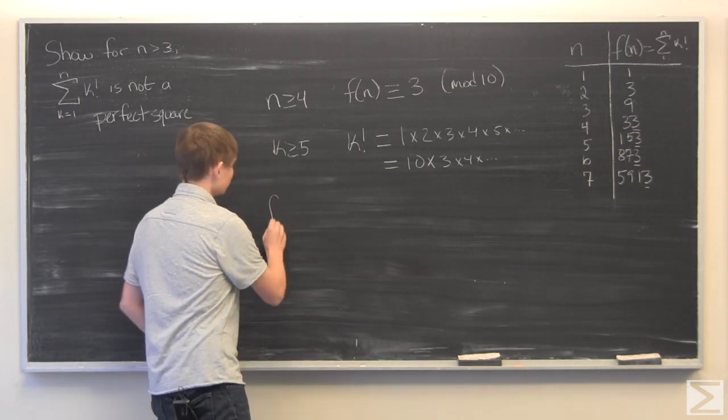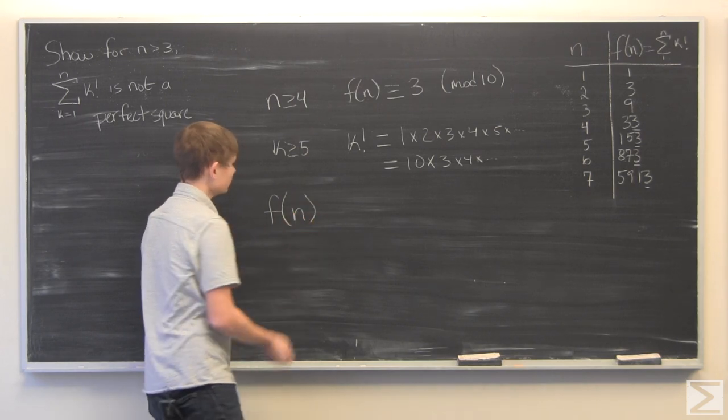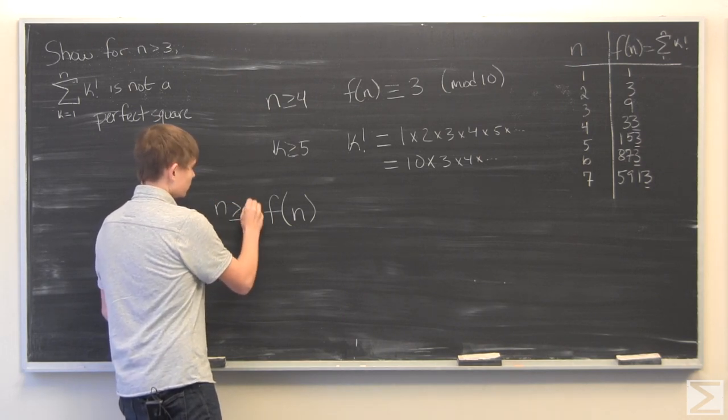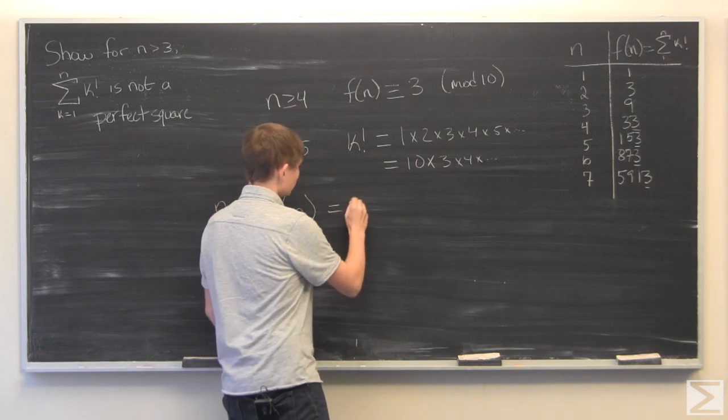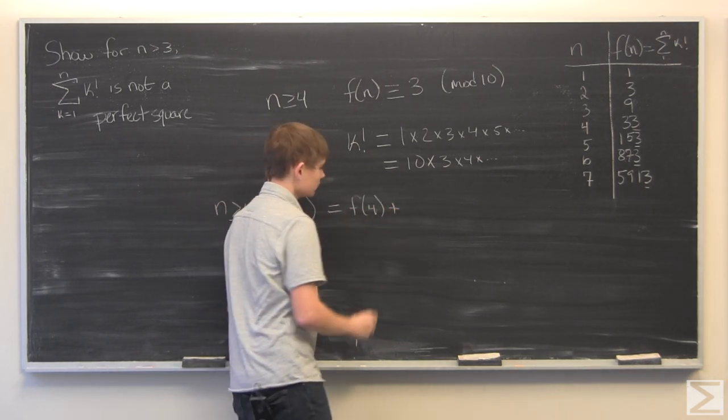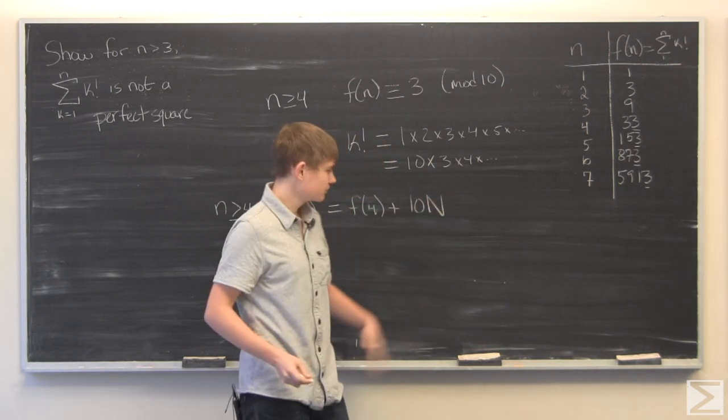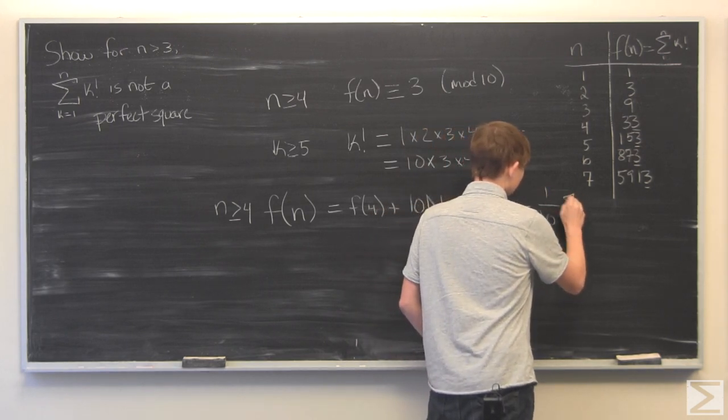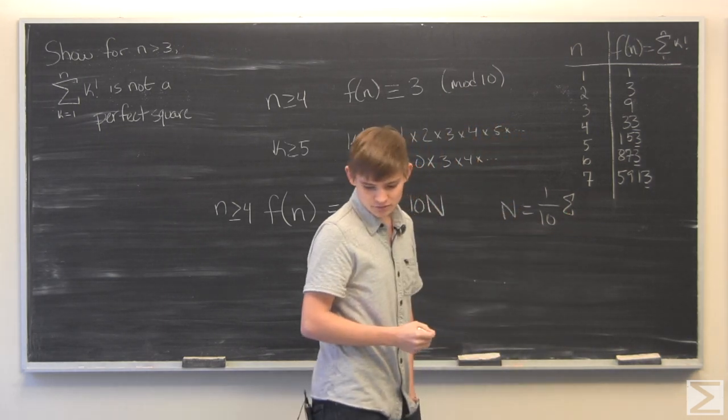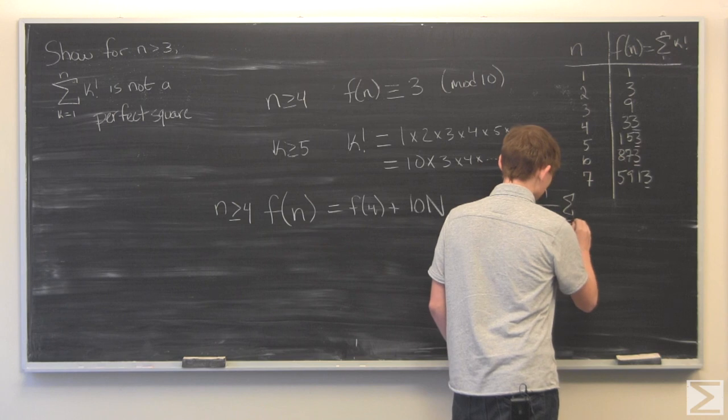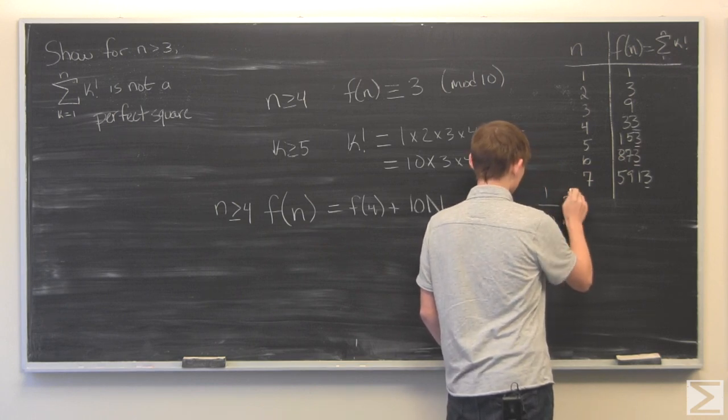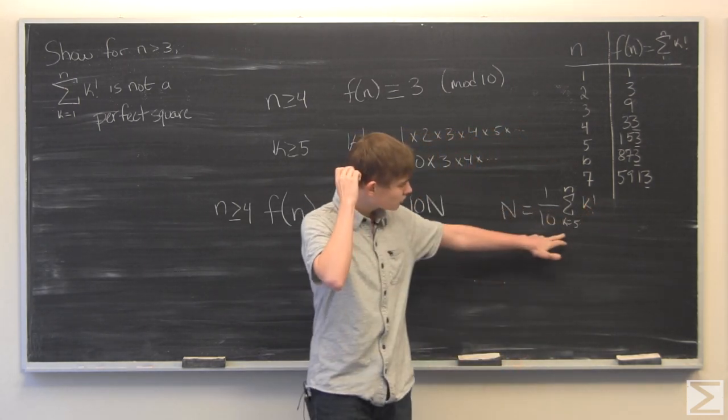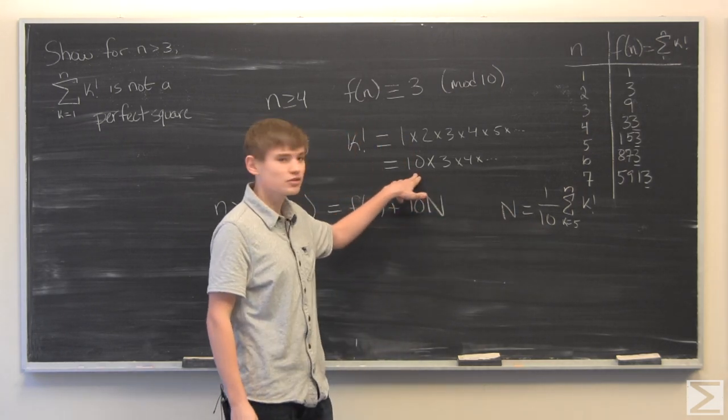Therefore f of n for n greater than or equal to 5 will be equal to f of 4 plus 10 times the number n where n is equal to 1 tenth of the sum from k equal to 5 to n of the factorial function which is going to be an integer since we just showed that 10 is always going to be a factor.